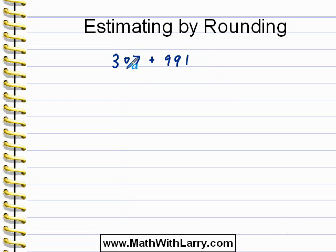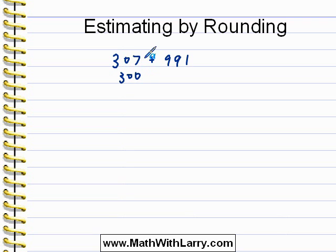When I see 307, what probably makes the most sense in this problem is to just round it to the nearest hundred, which is 300. A person could argue why not make it 310 since it is closer to 310 than it is to 300, but in the case of this problem, it should be sufficient to just make it 300.